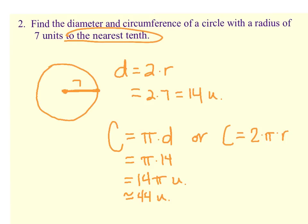43.98 actually would round all the way up to 44 units. Because 43.98, you can't round a 9 up. So we would round up to 44.